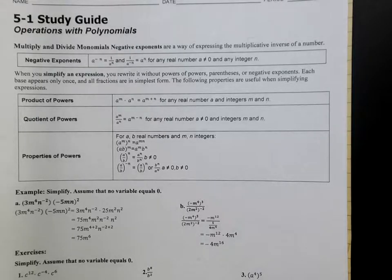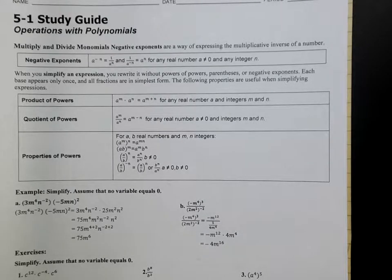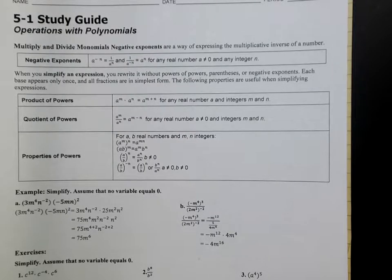The first part of this is all about your operations with exponents. So even though this says operations with polynomials, really what we're looking at here is just monomials — simplifying monomials. These are a lot of rules that you used in Algebra 1.